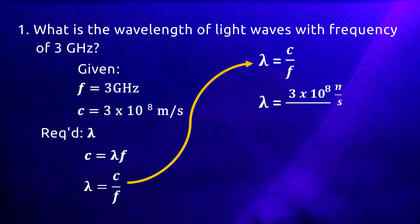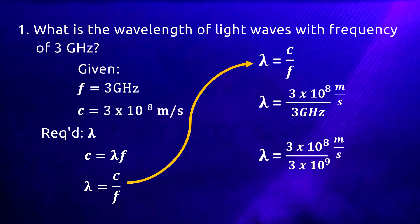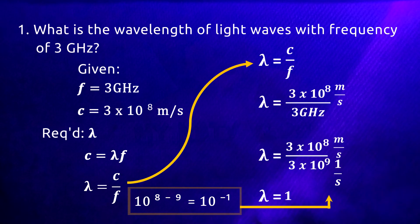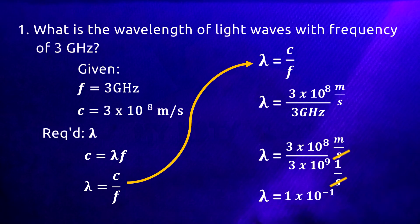We substitute the given values: the speed is 3 times 10 to the 8 meters per second, and the frequency is 3 gigahertz, rewritten as 3 times 10 to the 9 hertz since giga equals 10 to the 9, and hertz equals 1 over second. We divide: 3 divided by 3 equals 1. Since the operation is division, we subtract the exponents: 8 minus 9 equals negative 1. The seconds cancel out, giving a wavelength of 1 times 10 to the negative 1 meter.